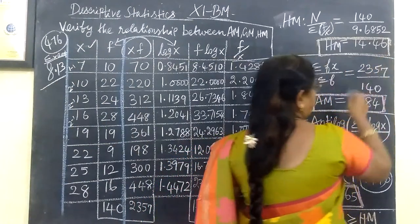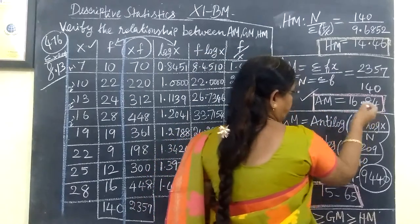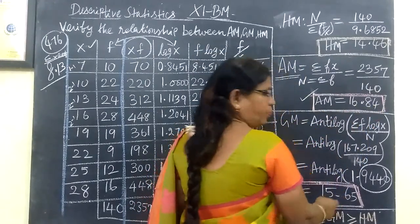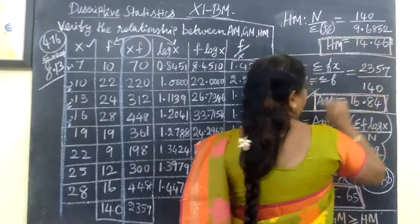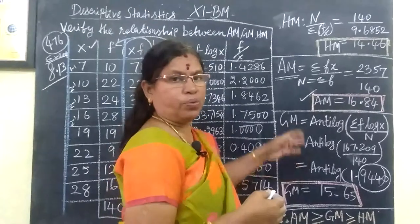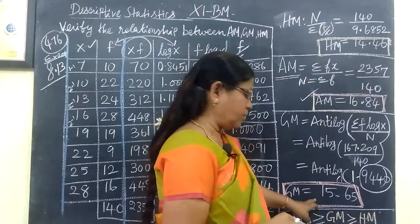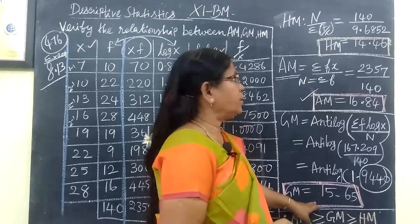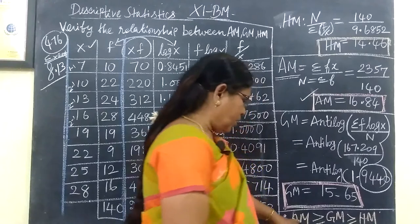Comparing the values: arithmetic mean is 16.84, geometric mean is 15.65, and harmonic mean is 14.46. The relationship is arithmetic mean is greater than geometric mean, which is greater than harmonic mean.